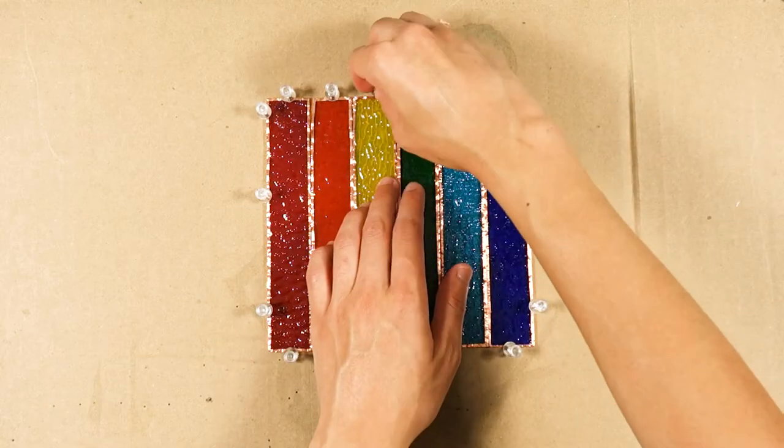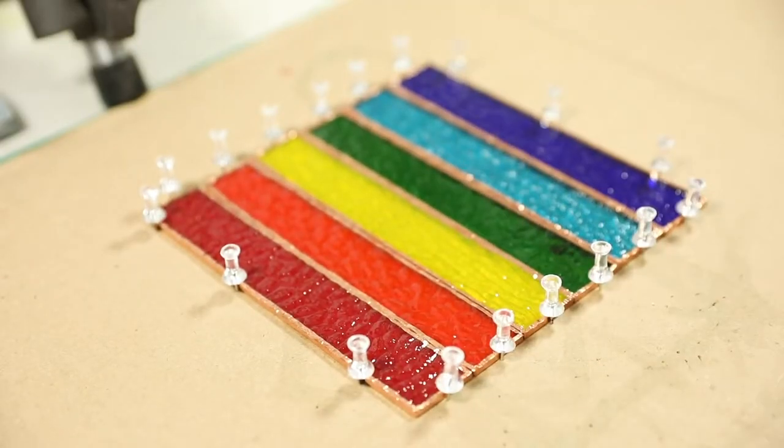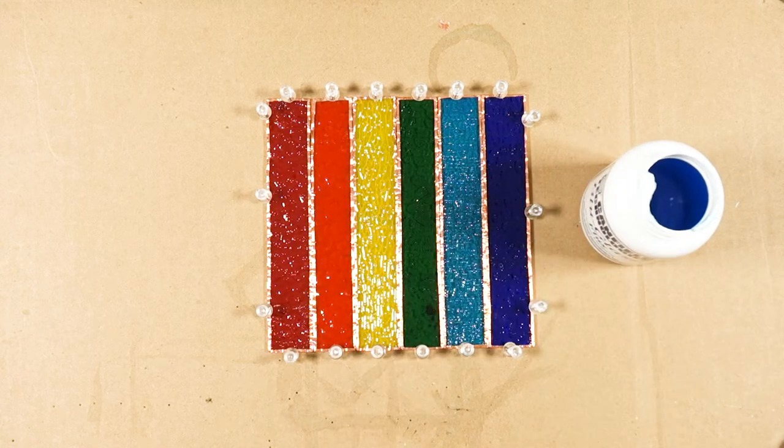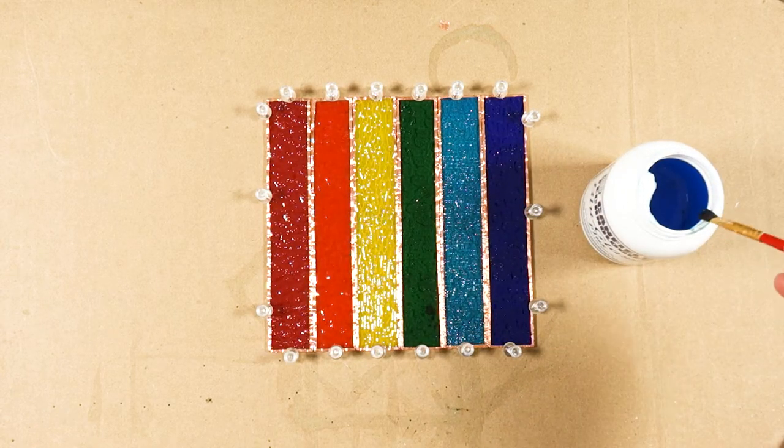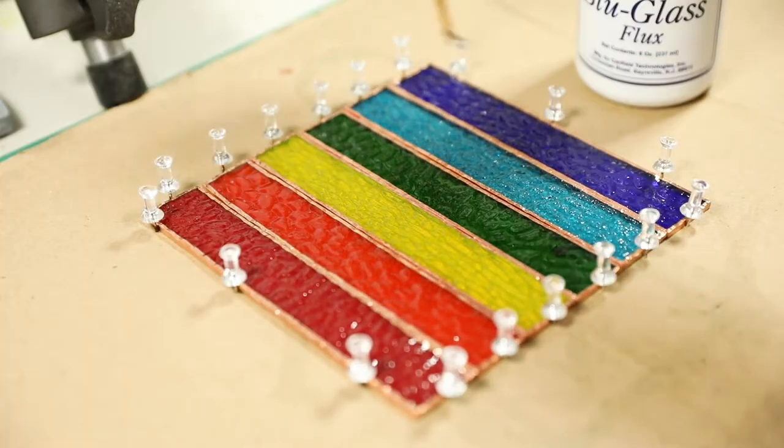Line up your glass pieces and place push pins all around your edges. This will keep the glass pieces in place while you're soldering. With a paintbrush, put some liquid flux on the top of the copper foil. Flux is what helps the solder stick to the copper foil.